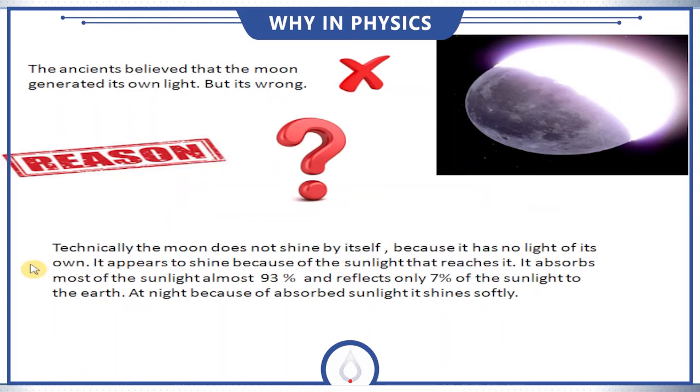Technically, the moon does not shine by itself because it has no light. It appears to shine because of the sunlight that reaches it. It absorbs most of the sunlight, almost 93%, and reflects only 7% of the sunlight to the earth. At night, because of absorbed sunlight, it shines softly.